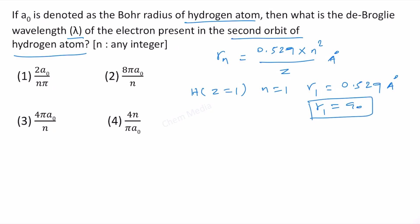Now, it is mentioned as second orbit. Therefore, the n value is equal to 2 here. When n value is equal to 2, then 0.529 times 2², so that is 4. Therefore, this is 4 times a₀.